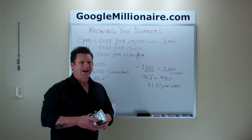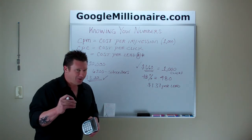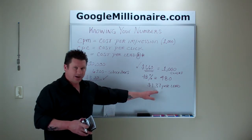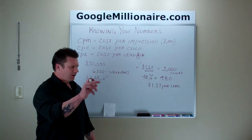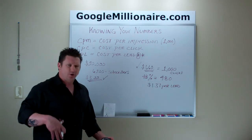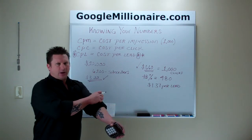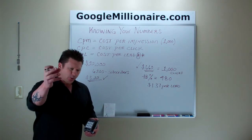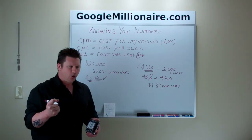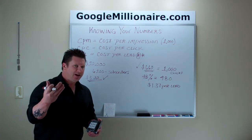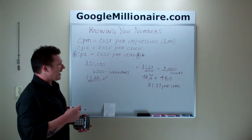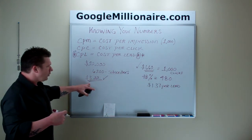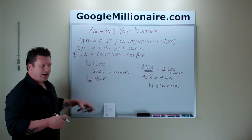If you can get leads for a dollar or less, get as many as you can — as long as it's quality traffic. $1.37 a lead is awesome. Clicks mean nothing; clicks mean someone clicked on your website — that doesn't put money in your pocket. Getting people on your list is what puts money in your pocket. Once we get people on our list, we're going to monetize our list. We're going to get 3% to 5% minimum of people to do business with us — but if you're following my training, we're shooting for 10% to 15%, because that's what I average. So if I continue to grow my list and keep my CPL under my average income from my list — $3.22 — I am in profit.